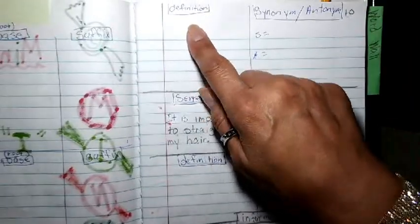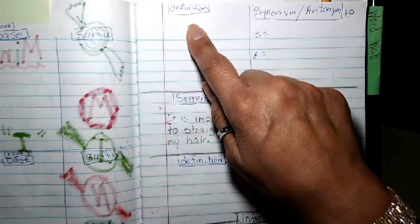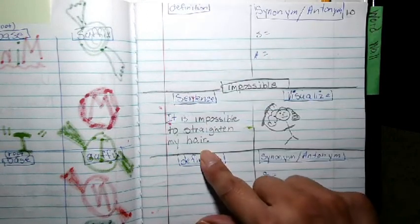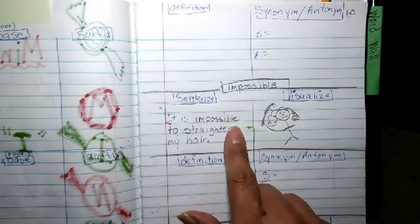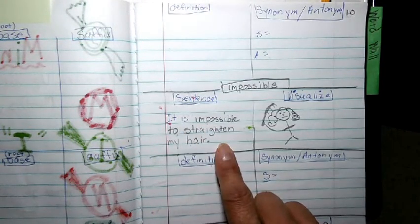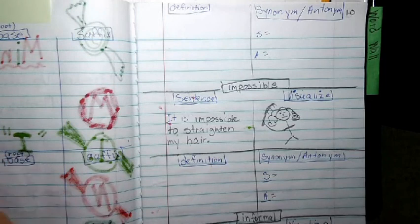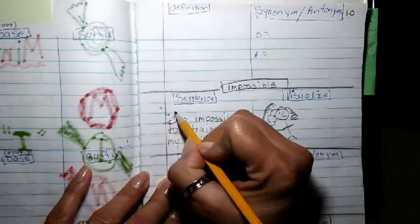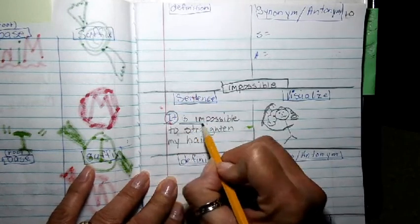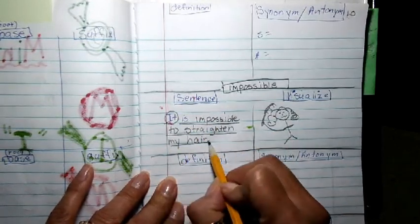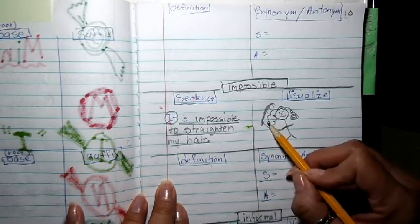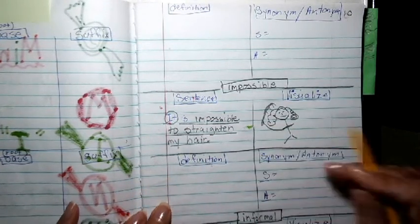Now, to get the definition, I can go to dictionary.com or I can get a dictionary. The sentence I used was, it is impossible to straighten my hair. Right? So my complete subject is it. And my complete predicate is impossible to straighten my hair. And there I am trying to comb my hair. Ouch. Okay.